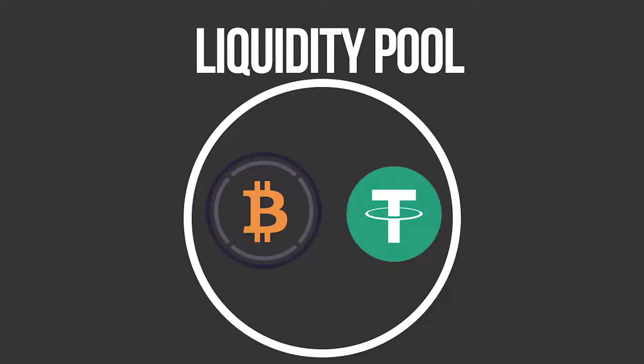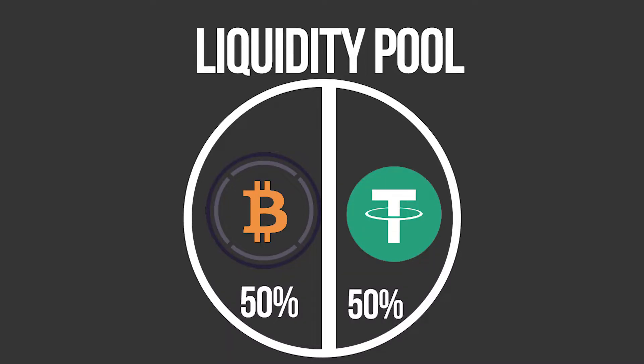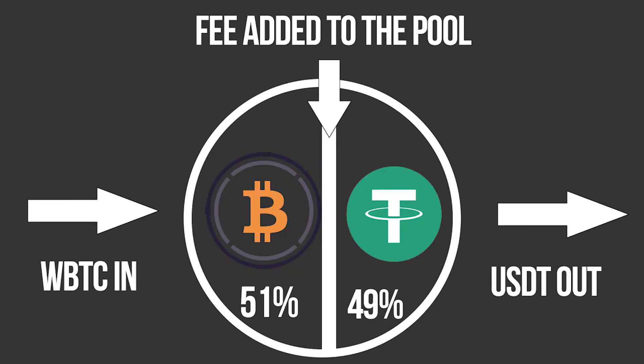Now the other part where yield in DeFi protocols comes from is liquidity providing. In decentralized exchanges, for a token to be able to trade you need a liquidity pool for at least a single pair. Usually this pair is combined with a stablecoin, and people put up liquidity in this pool so you could trade that token. So how it works is there is a pool where half of it is, let's say, a stablecoin and half of it is token X. When people come and want to sell their token X, they put their token X in the pool and get their stablecoin out, and the same goes for buying token X.